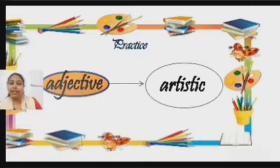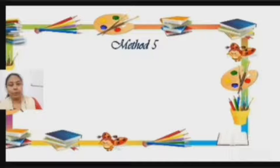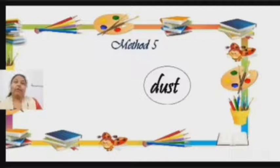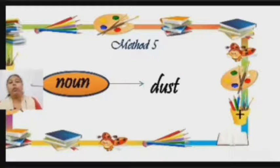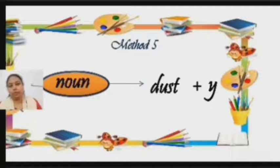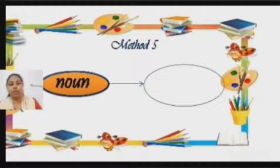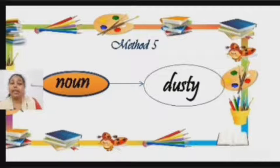Now let us see the fifth method of changing a noun into an adjective. The word is 'dust'. I am going to add only '-y' to this word, and the new word which will be formed is 'dusty', which is an adjective.